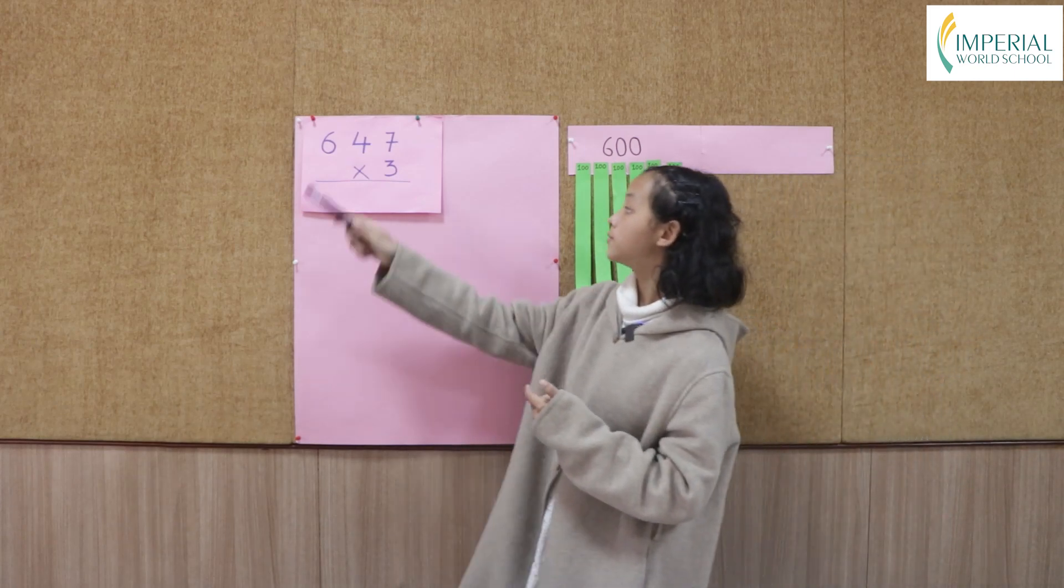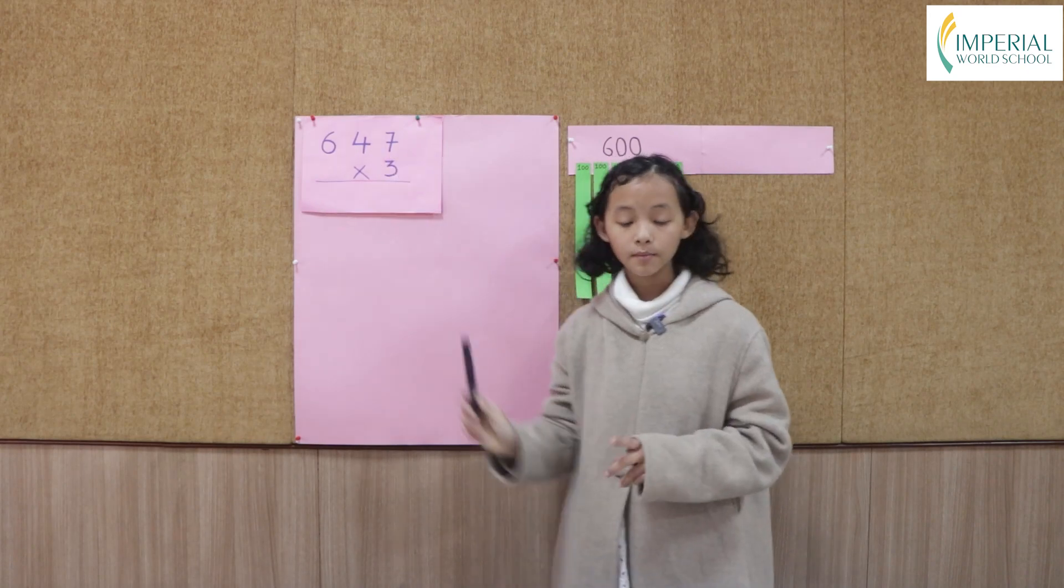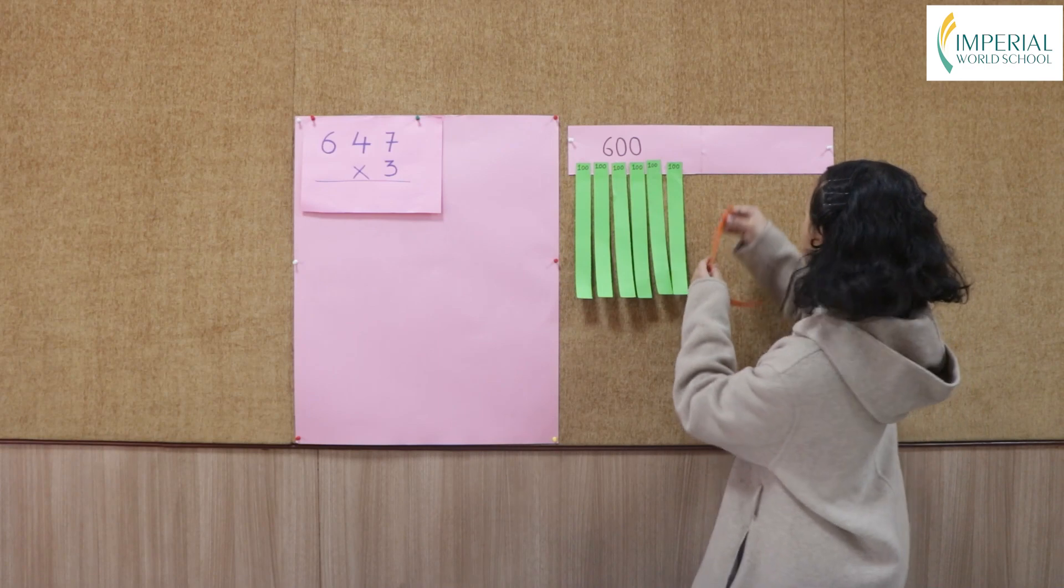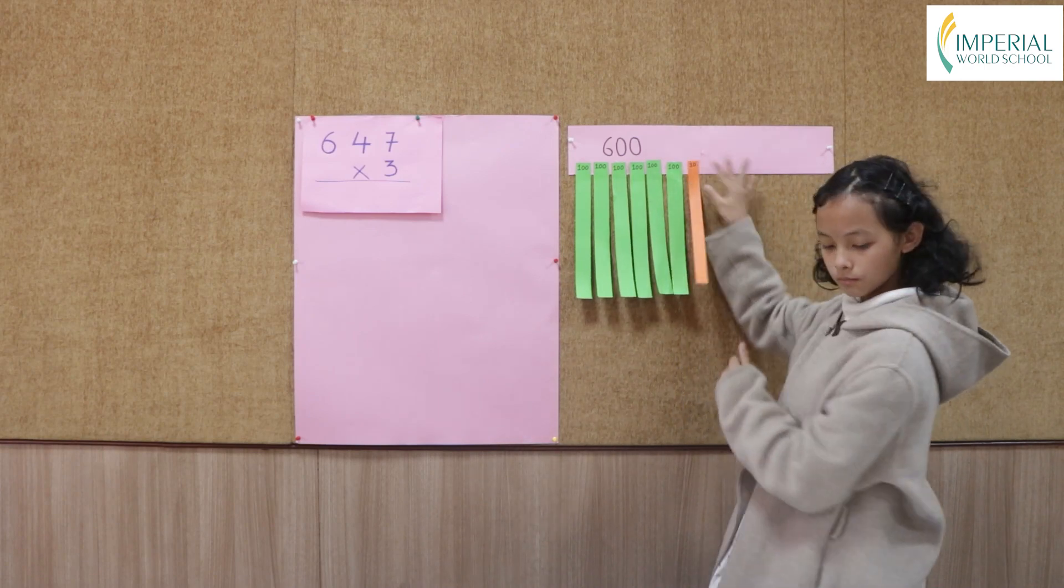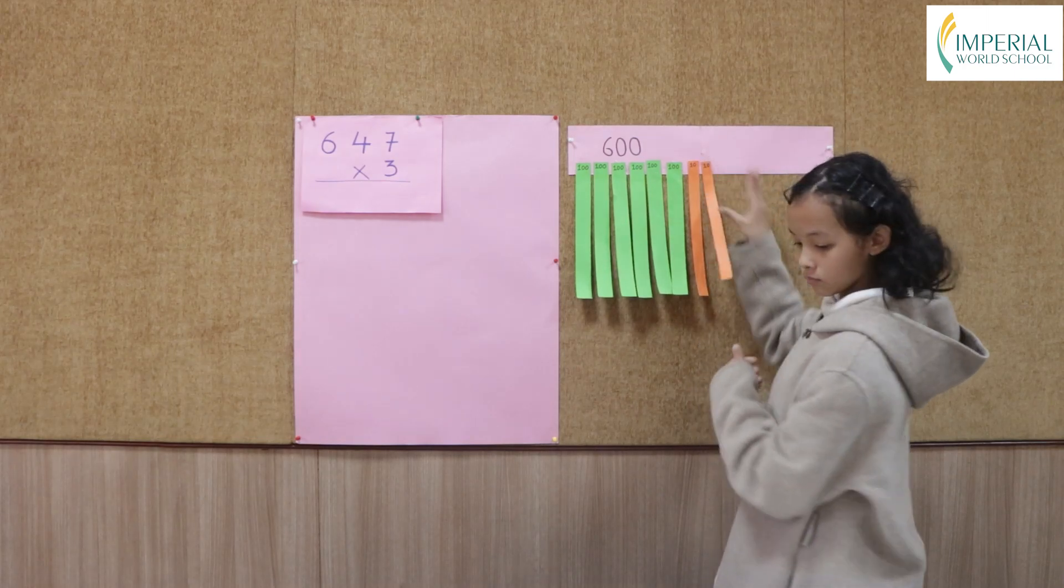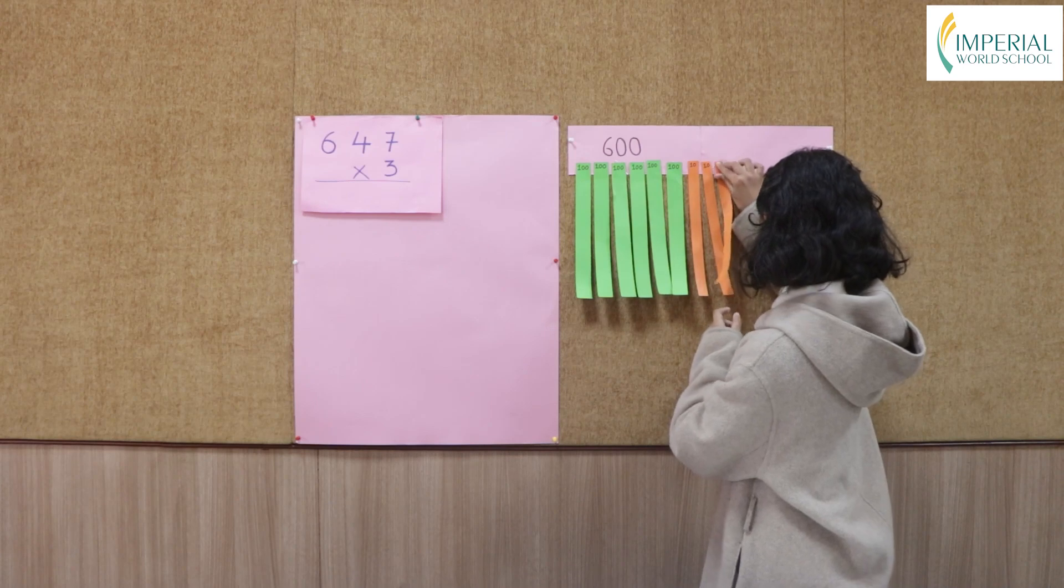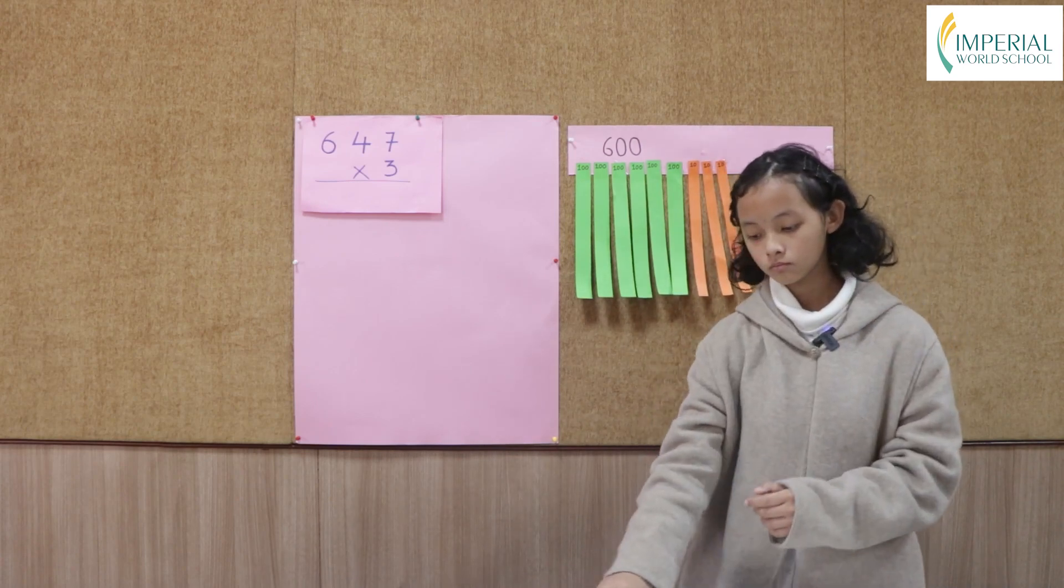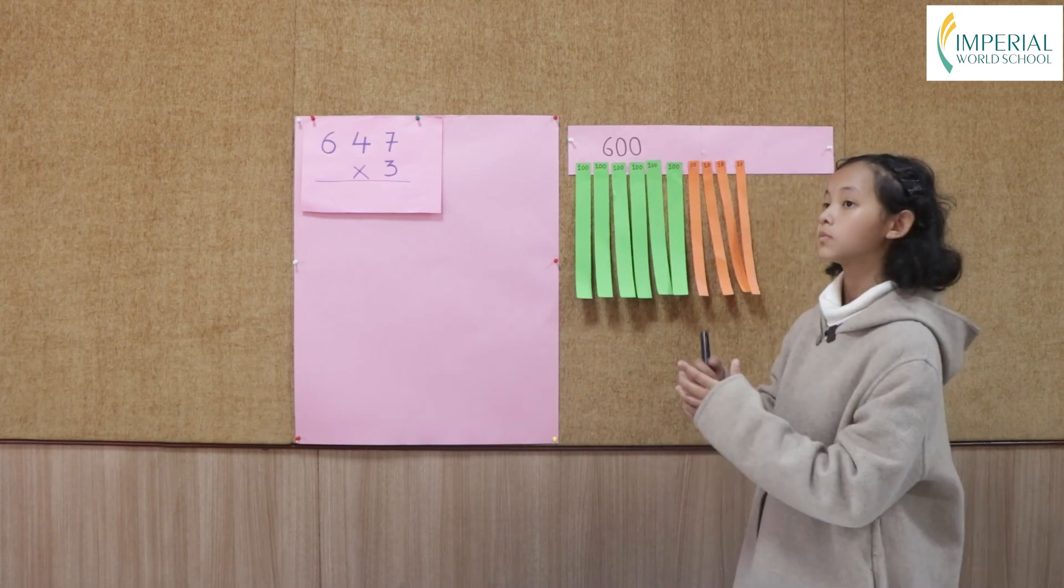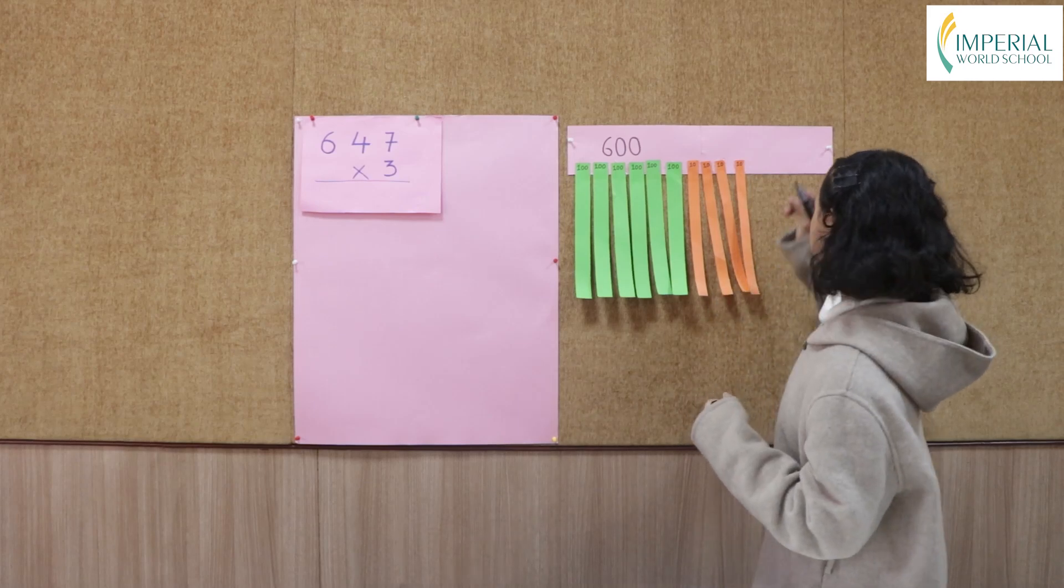Now let's move on to 4. The place value of 4 is 10, so I'm going to take 4 tens. Now let's write 40 on top of the tens.